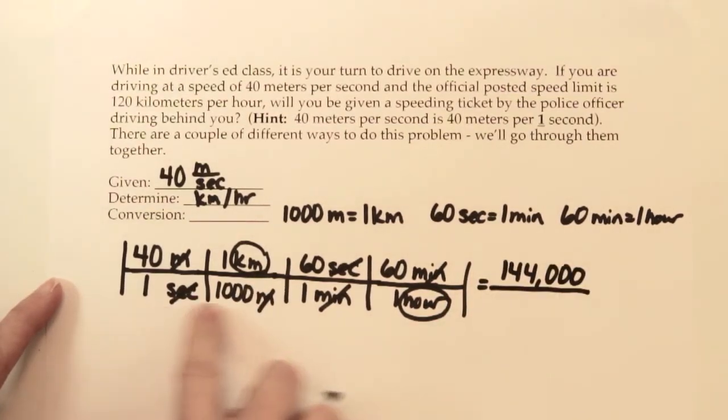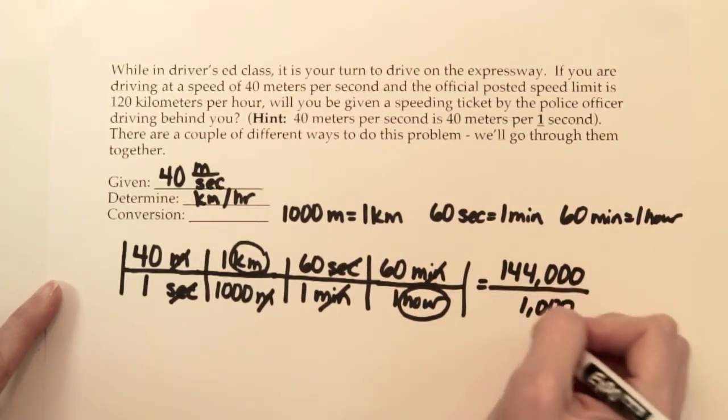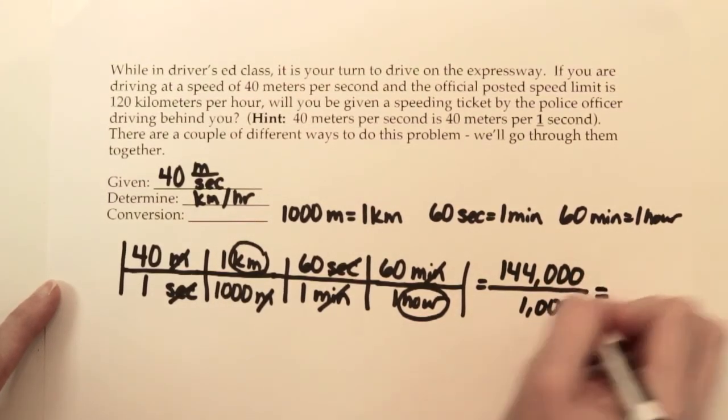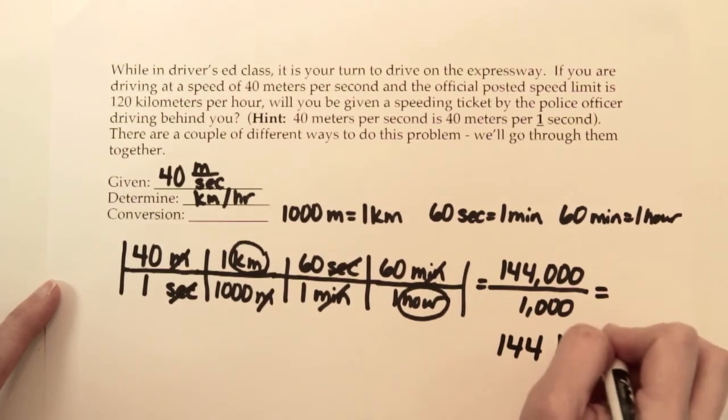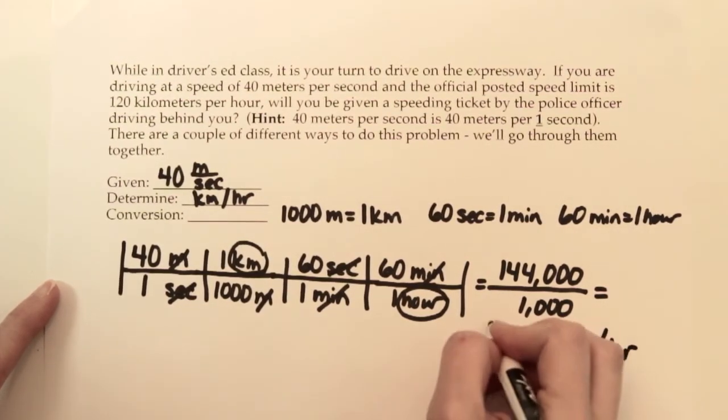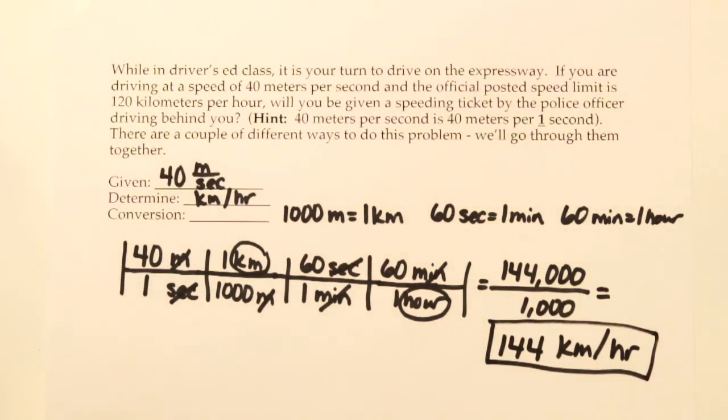On the bottom, 1 times 1,000 times 1 times 1 is 1,000. So 144,000 divided by 1,000, you're going 144 kilometers per hour. You're going to have a bad day. You're going to get a speeding ticket by the police officer driving behind you.